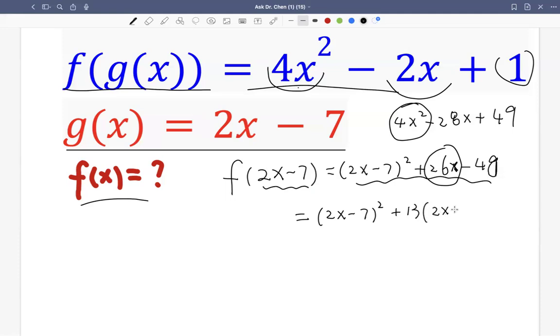Now we have 2x minus 7. By doing so, we still have positive 26x, but now the constant term will have 13 times negative 7, which is negative 91, right? 13 times negative 7, that's negative 91.